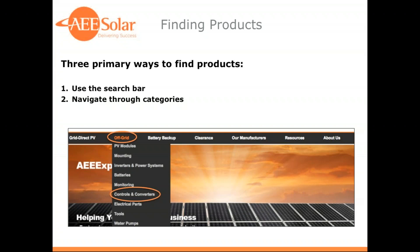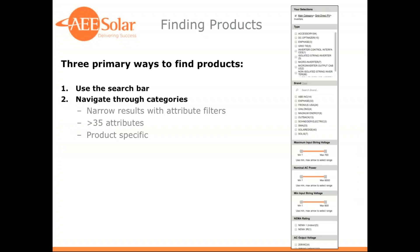Another common way to find products is to navigate through the category menu found in the black bar in the header of the site. Here you can roll over one of the main categories with your cursor and then choose a more specific subcategory from the drop-down menu. In this case, we rolled over off-grid and chose controls and converters as a subcategory. Once results are displayed on the category listing page, you can further refine those results using the filter menu on the left side, with upwards of 40 attributes to filter with.